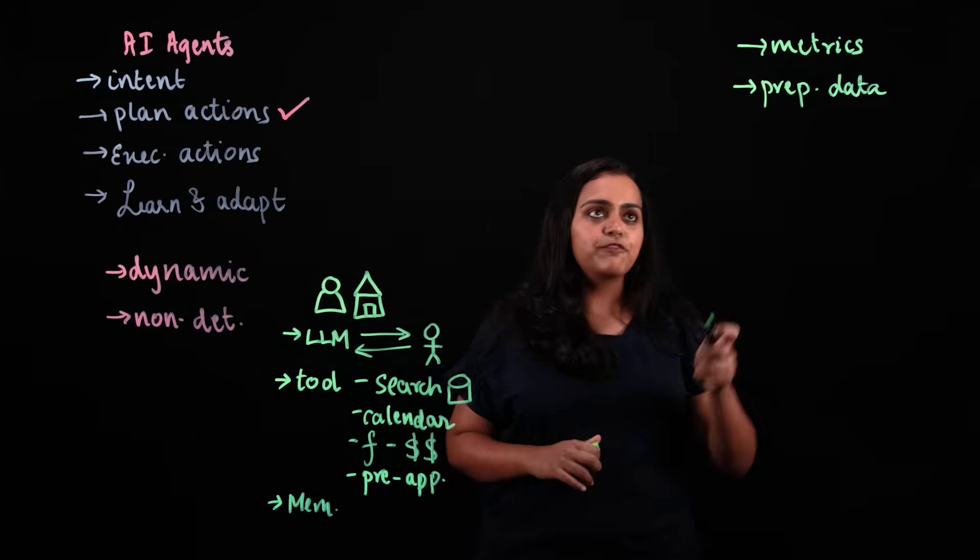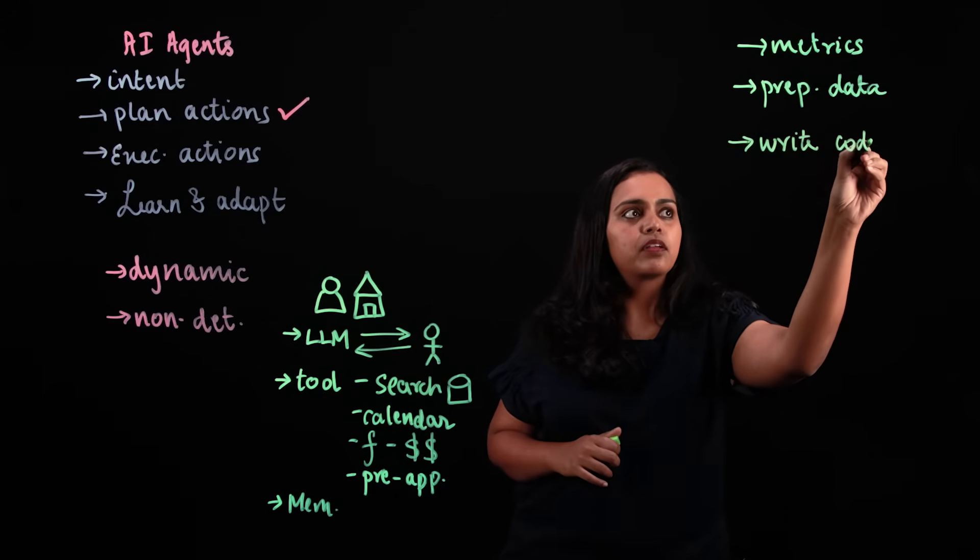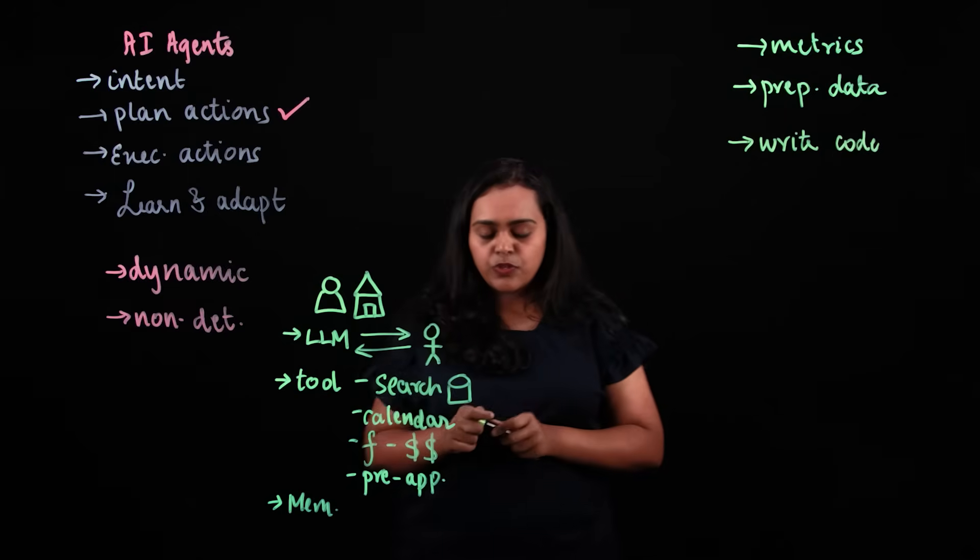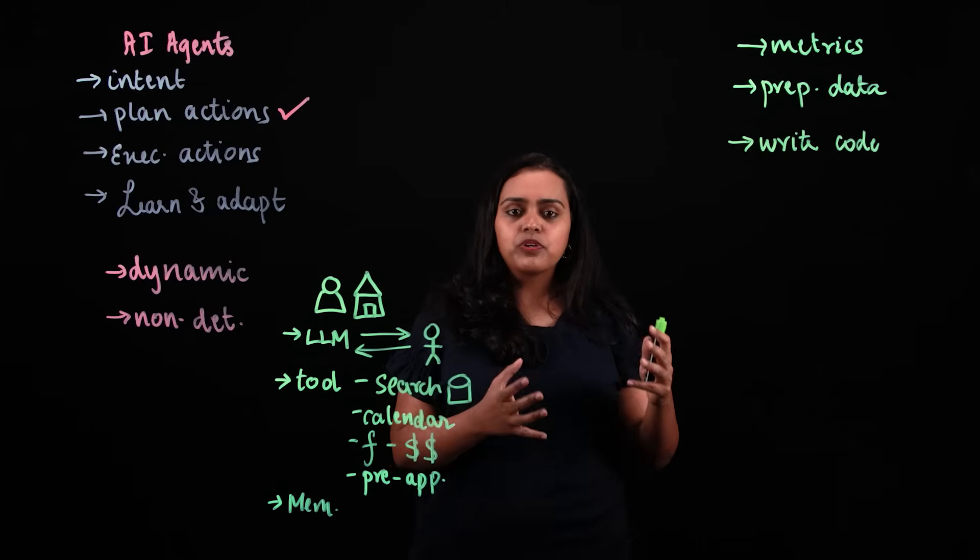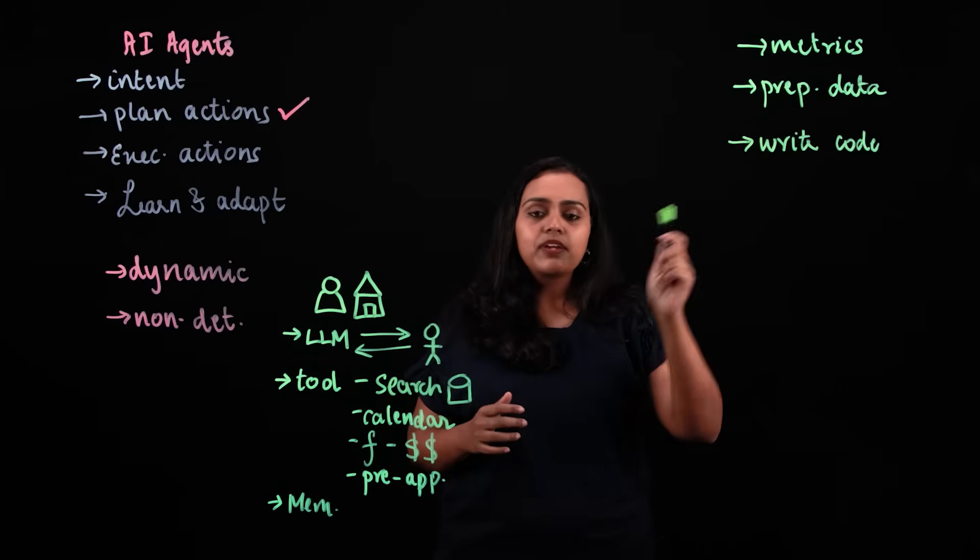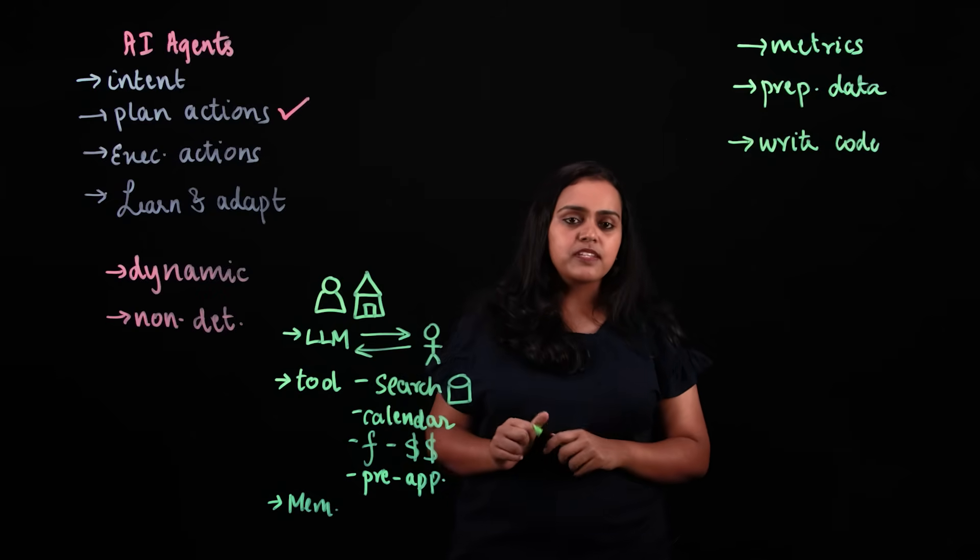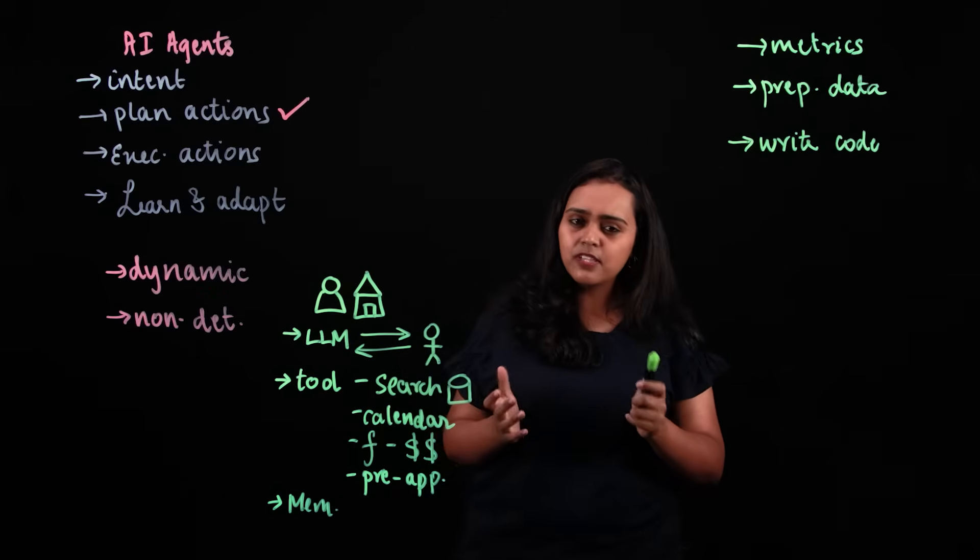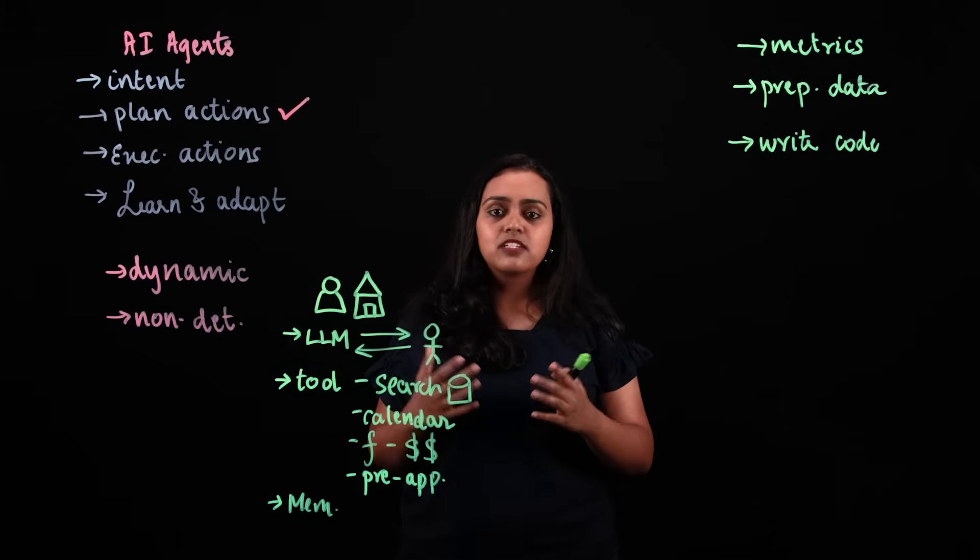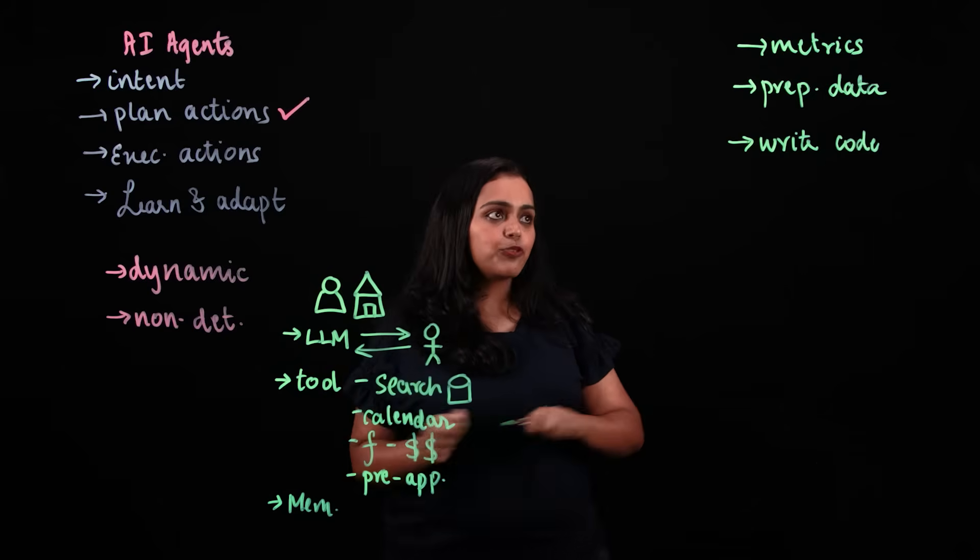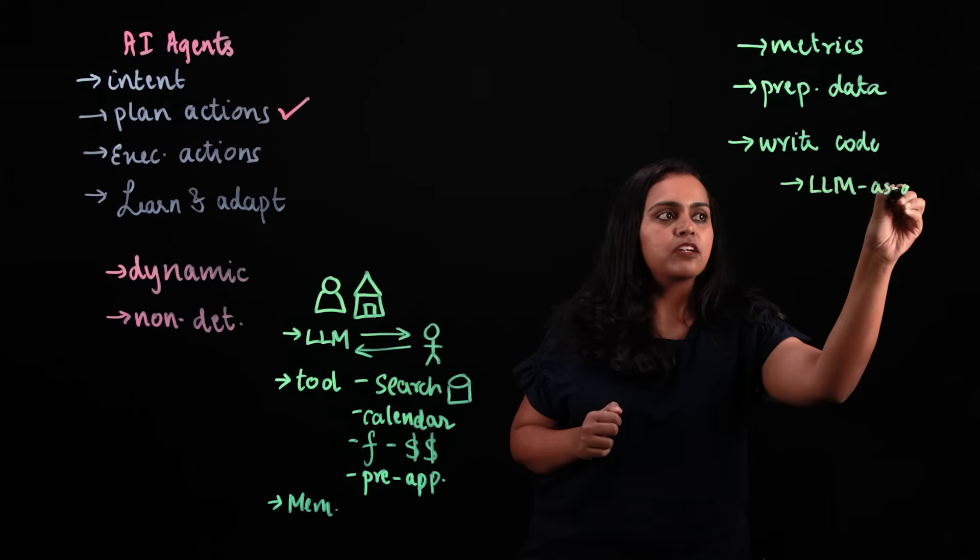Once you have the data figured out, the next thing you would do is write code. If you have ground-truth data, you need code to compare that data with the output of your agent to compute the necessary metrics. Let's say you are also using some techniques like LLM as a judge. This is a very popular technique where you would use a large language model to look at the output of an agent and determine if it's good or not. If you are using that technique, you would be writing the prompts for LLM as a judge.